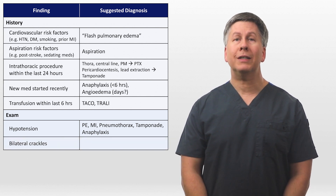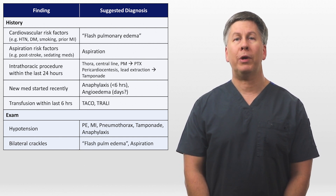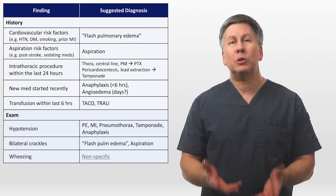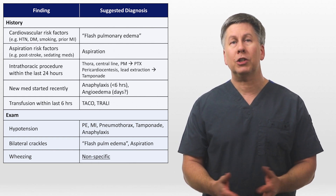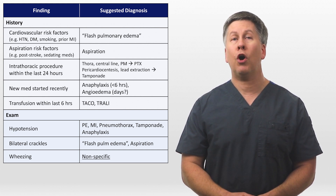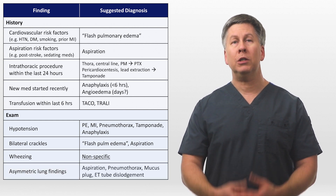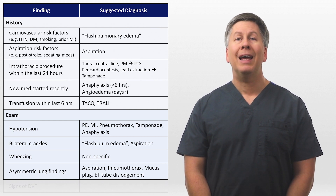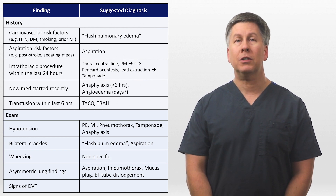Bilateral crackles are consistent with any cause of flash or cardiogenic pulmonary edema, as well as a later sign of aspiration. On the other hand, bilateral wheezing is actually too nonspecific to be diagnostically helpful, as it can be seen in most etiologies under consideration — it is not specific for asthma or COPD, particularly when it develops in a patient who is already in the hospital. Asymmetric lung findings can be observed in aspiration, pneumothorax, a mucus plug, or endotracheal tube dislodgement. And signs of a DVT, such as an asymmetric red or swollen leg or calf tenderness, suggest a PE.